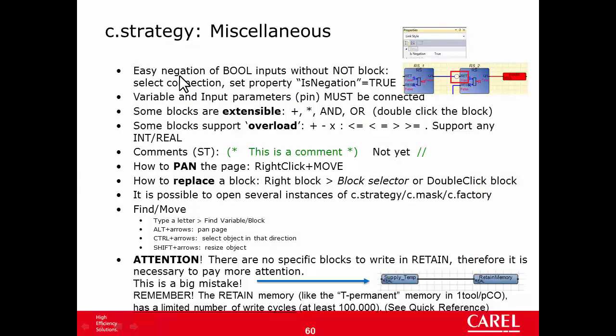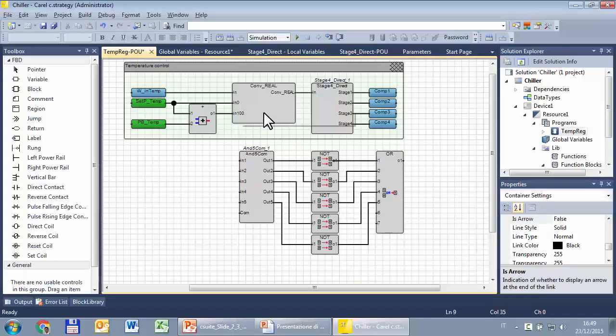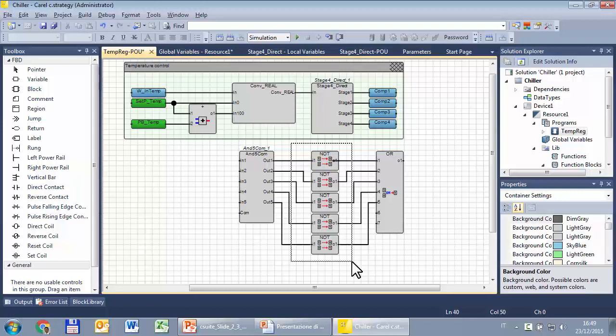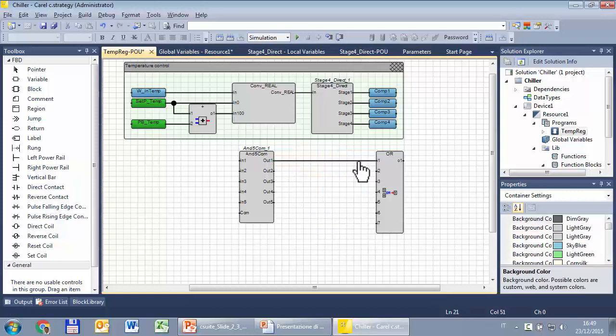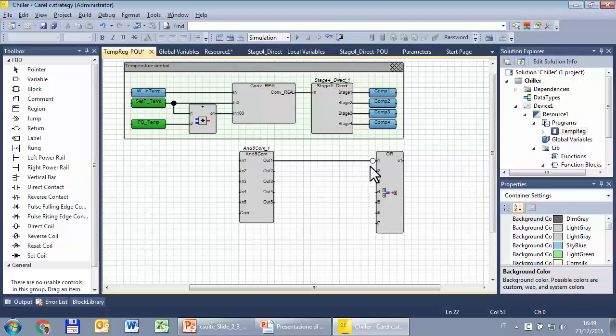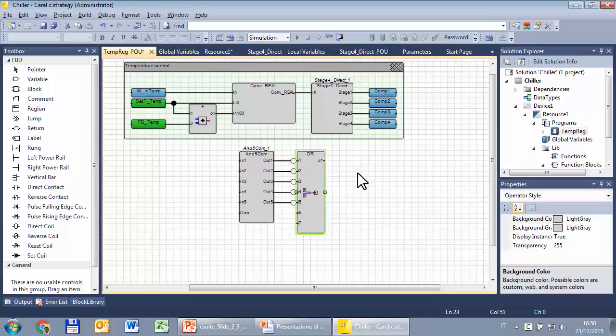The next function is not C-Strategy specific, but it is very convenient in order to save space in the page and sometimes also to increase the readability of the code. This function allows to replace NOT blocks, like this, with a connection where the property negation is set to true. So the circle is the evidence that there is a NOT in the middle, so the incoming value is negated before it enters the next block. So the strategy is much more compact now.